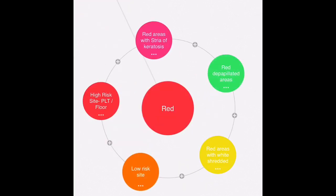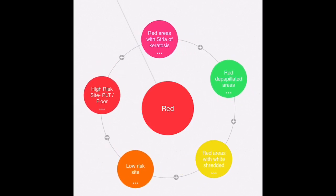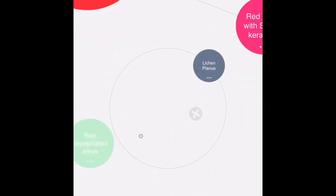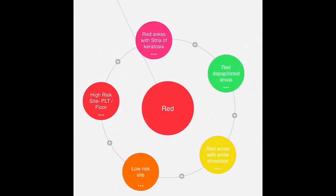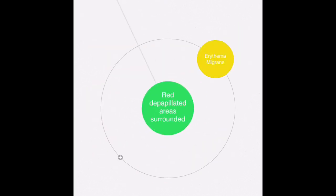Starting with the red patches, if you notice a lesion or the patient history presents red areas with stria of keratosis, most likely the diagnosis points towards lichen planus. If it's lichen planus, then most likely the lesions will be associated with the cheek or desquamative gingivitis.